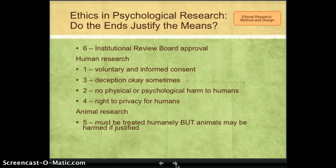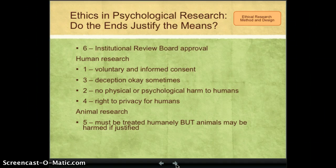The main job of the Institutional Review Board is to ensure that the study is set up to be ethical. For human research, there are four key areas the IRB will examine. The first is that participants must be voluntary — they must have volunteered for the study. You cannot force someone to participate in psychological research, and you also cannot coerce or manipulate them.